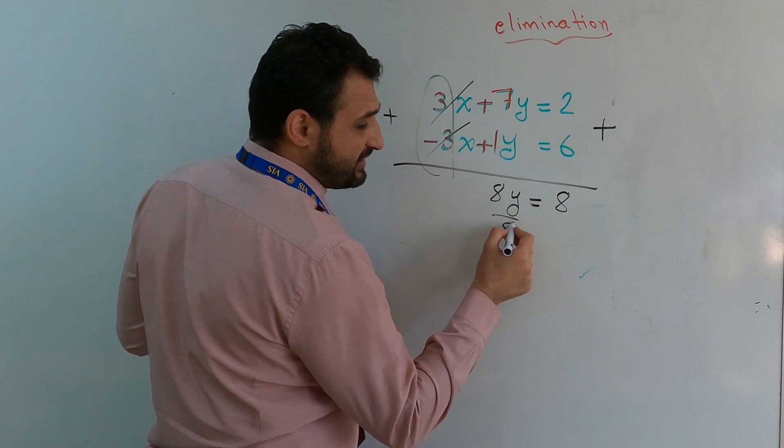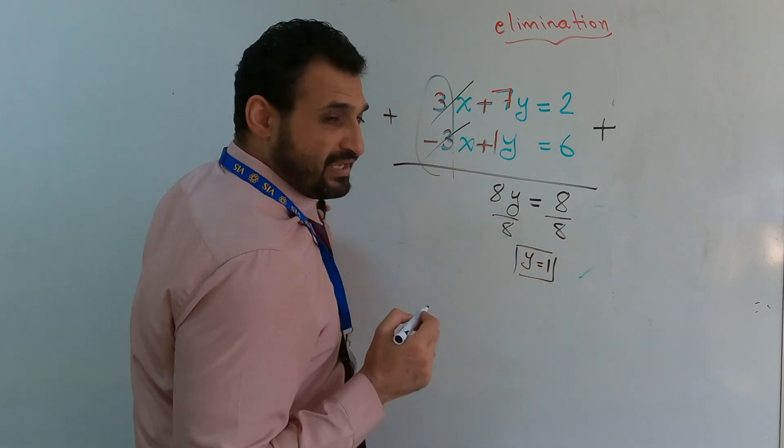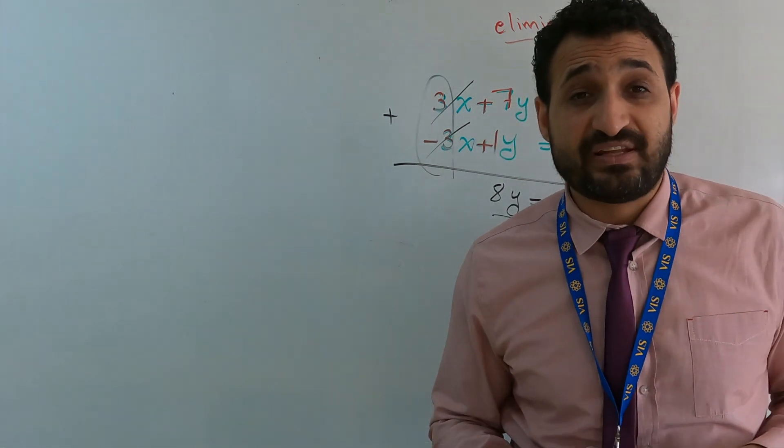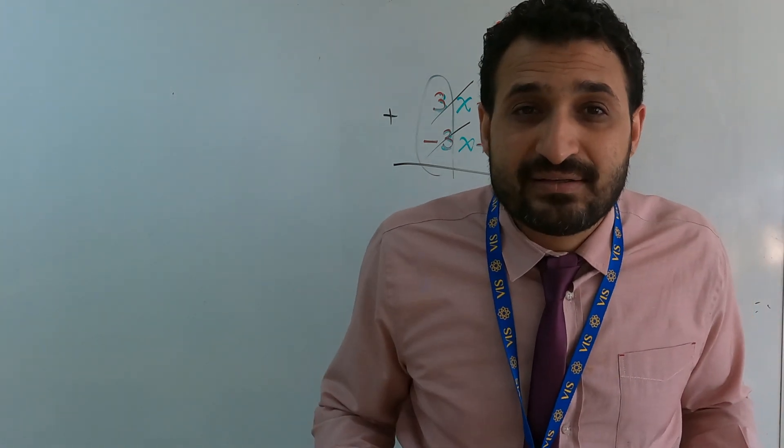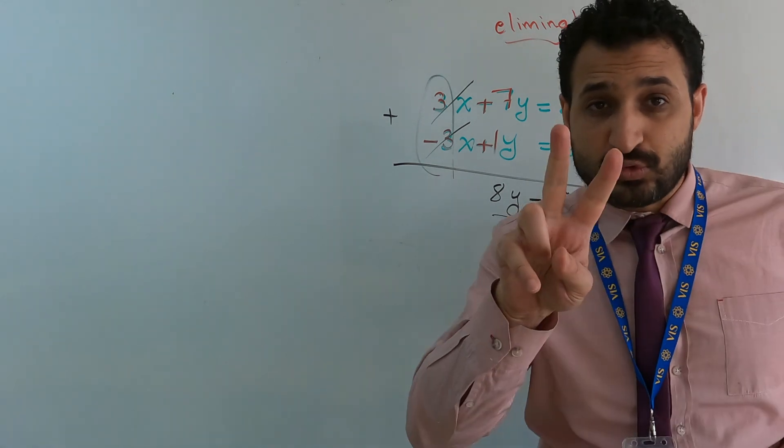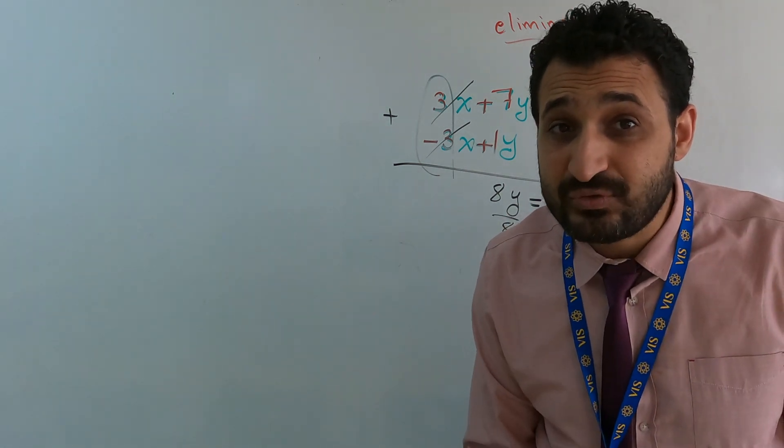Divide by 8 both sides, y equals 1. Now do you remember the question? Solve the system of linear equations by elimination. When I say solve, what does it mean? What do I need? Give me the variables, right? How many variables are here? Two. You gave me only one, which is y. I need x. What should you do?